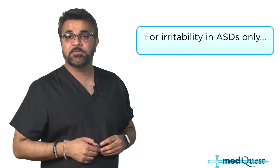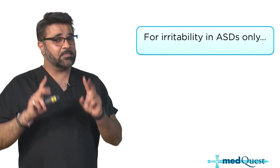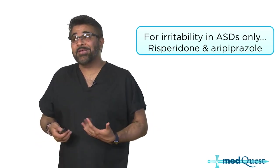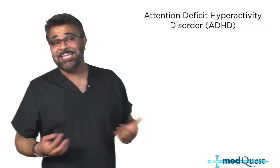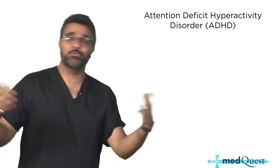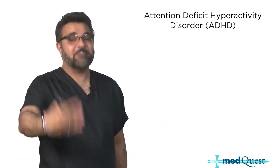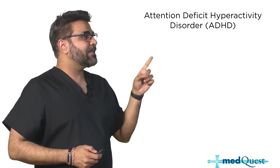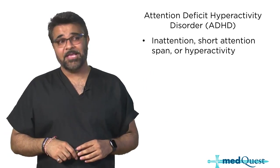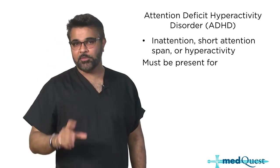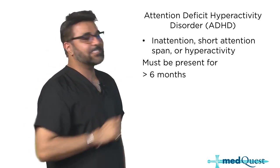For irritability in somebody with autism spectrum disorder - irritability and aggressiveness means risperidone and aripiprazole. But there are also people who are irritable or even hyperactive, and those people have ADHD, or attention deficit hyperactivity disorder. For those with ADHD, they have inattention or short attention span and are hyperactive. How long does it have to be present? It turns out, six months.